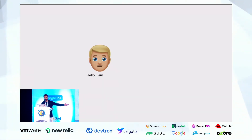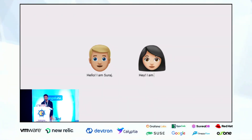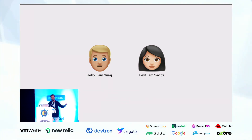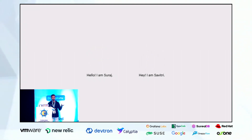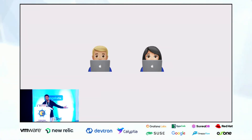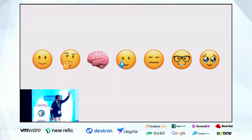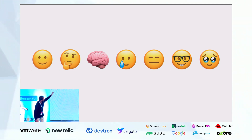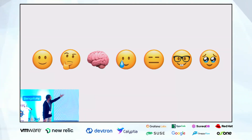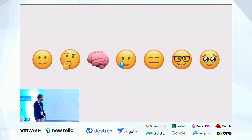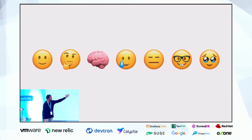Meet two friends, Suraj and Savitri — junior developers. One day they want to develop a bookstore web application. They sit together and start building the application, going through a rollercoaster of emotions: happy, then stressed about the problem statement, brainstorming, crying about what tech stack or programming languages to use, and finally figuring it out.